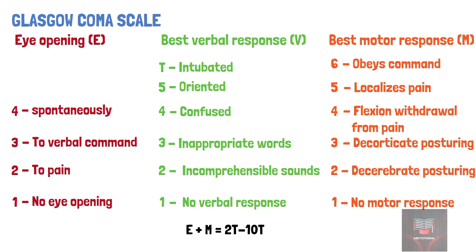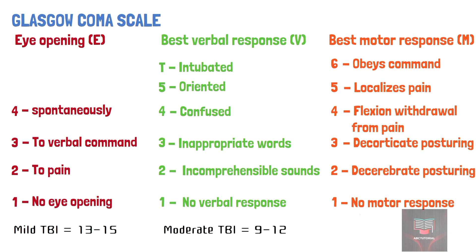The GCS is often used to define the severity of traumatic brain injury. Mild injuries are generally defined as those with a GCS score of 13 to 15. A moderate head injury is defined as a GCS score of 9 to 12. And a GCS score of 8 or less defines a severe head injury.